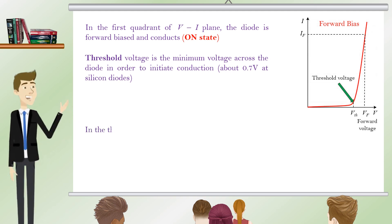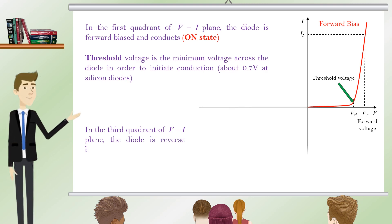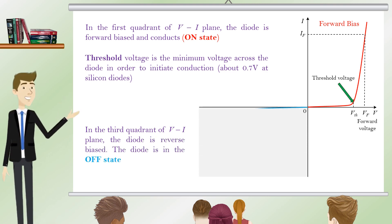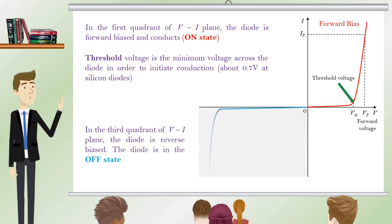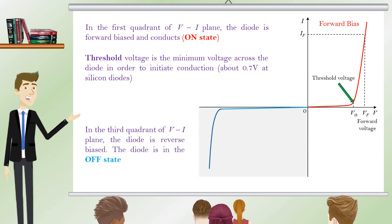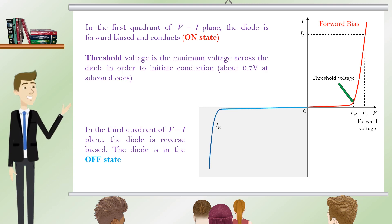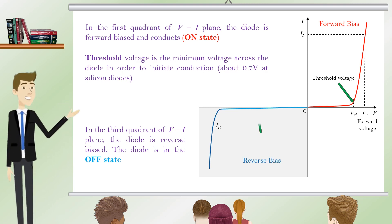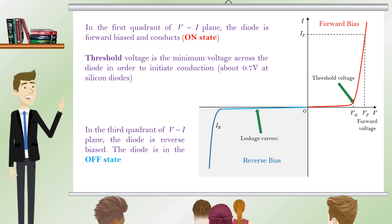In the third quadrant of the VI plane, the diode is reverse biased. The reverse current is extremely low, typically a few micro amperes, and is called leakage current.